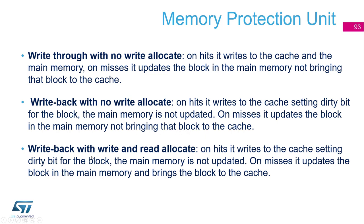For write-back with no write-allocate: on a write-hit, data is written to the cache and the dirty bit is set, but main memory is not updated; on a miss, it updates the block in main memory without bringing it to the cache. For write-back with write-and-read-allocate: on a hit, it behaves the same as the previous; but on a miss, it updates the block in main memory and also brings the block to the cache. This is not the easiest aspect, but it matters for ensuring coherency and performance.